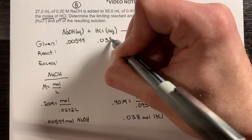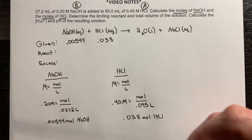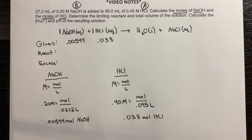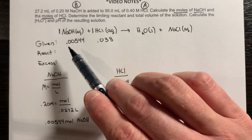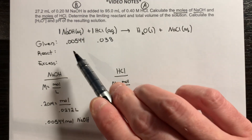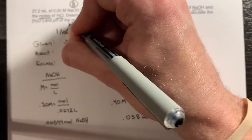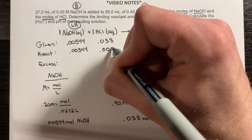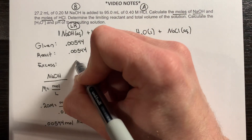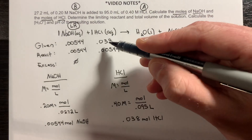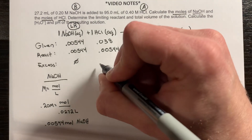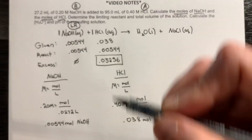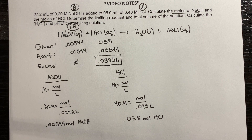What we find is that in this neutralization reaction, there's a nice one-to-one relationship between my base and my acid. I have less moles of base, so as they combine with the acid in a one-to-one ratio, I'm going to run out of sodium hydroxide first — that's my limiting reactant. All of that reacts, leaving zero sodium hydroxide. Through subtraction, 0.038 minus 0.00544 gives 0.03256 moles of excess hydrochloric acid. This excess is what will determine the properties of the solution.